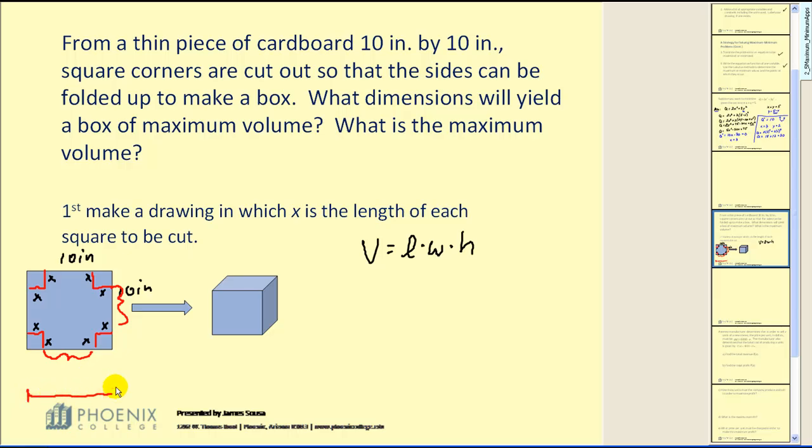Well, from this edge to this edge we know is 10 inches. So in order to find this shorter length, we would have to take 10 inches minus this piece, which is x. And minus this piece, which is also x. Which would give us 10 minus 2x. This distance would be 10 minus 2x. So would this distance here. And the height of the box would actually be the length x.